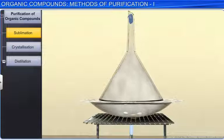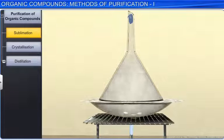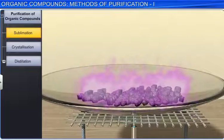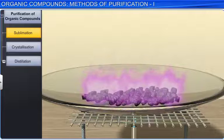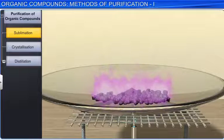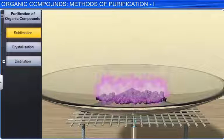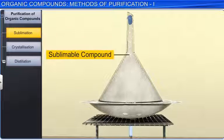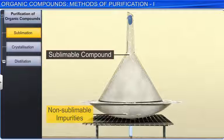Sublimation technique is used to purify sublimable solid organic compounds. Sublimation is a process which involves the conversion of a solid directly into vapor without any intermediate liquid state. This process is used for separating sublimable compounds from non-sublimable impurities.